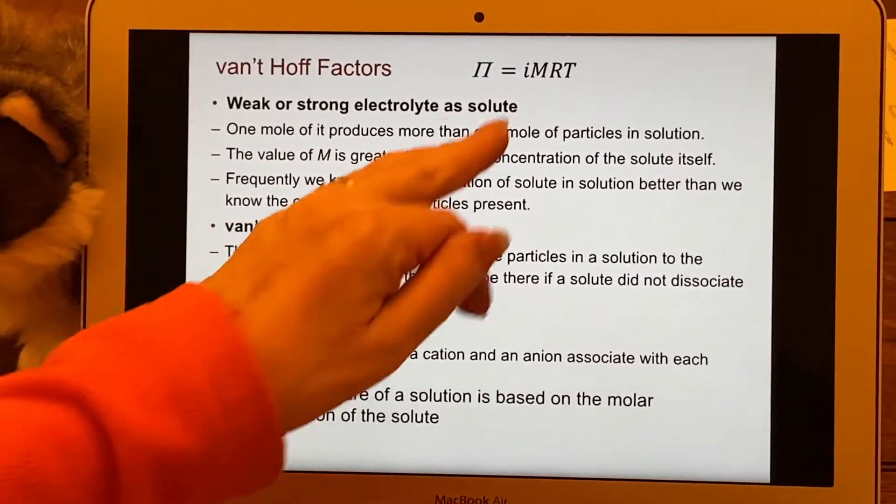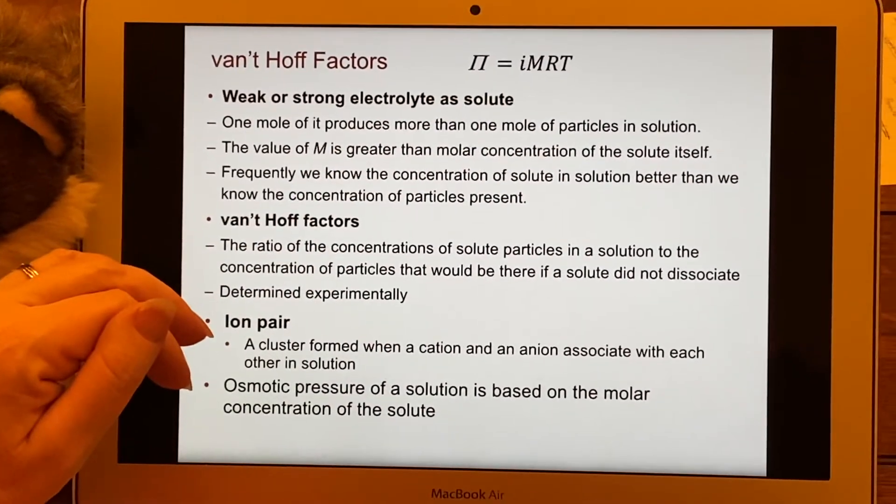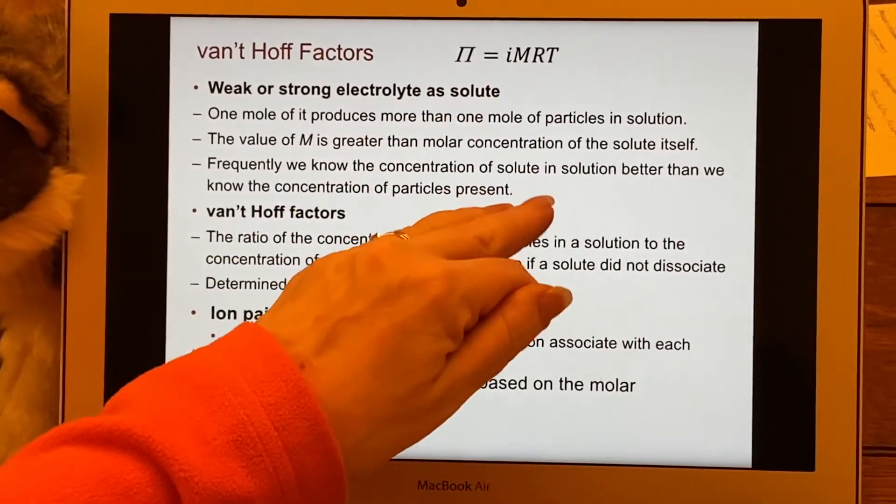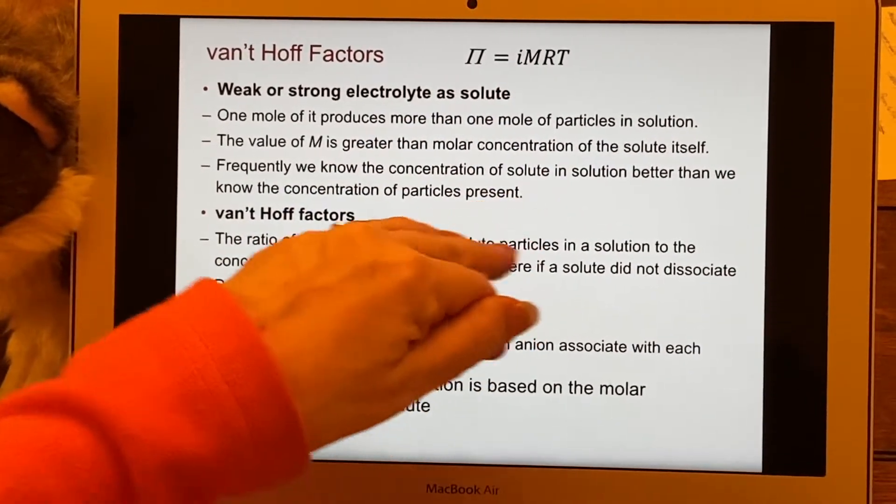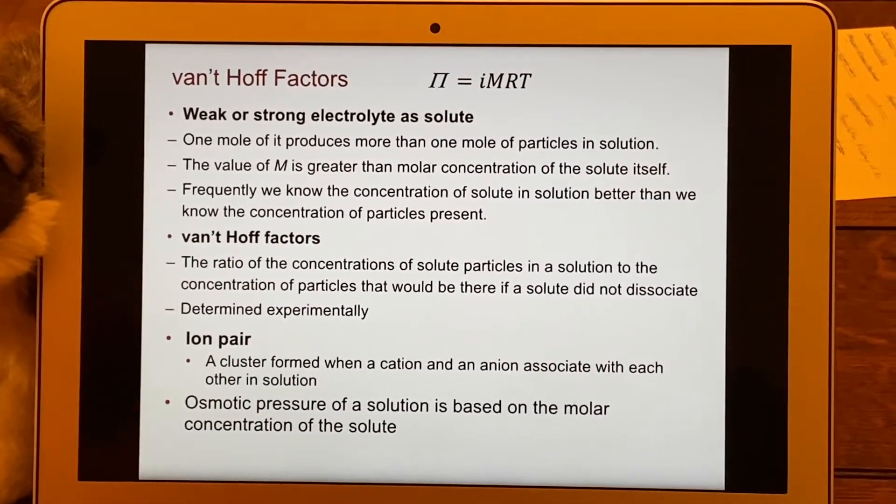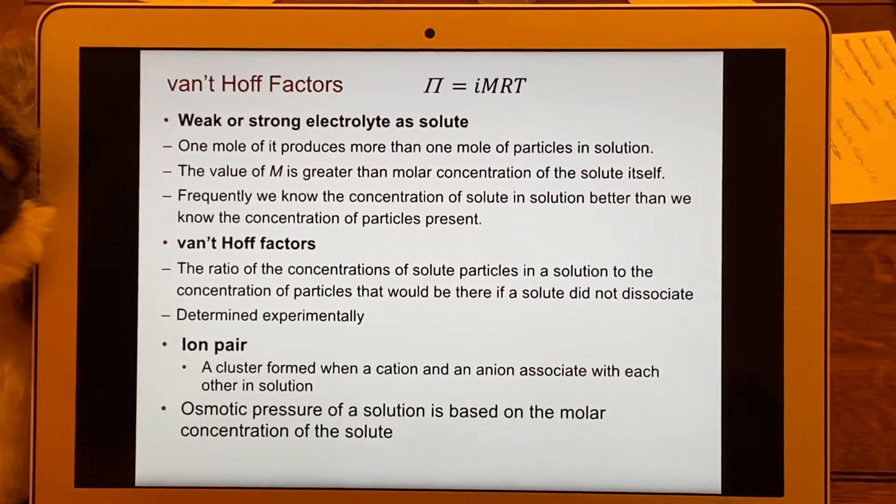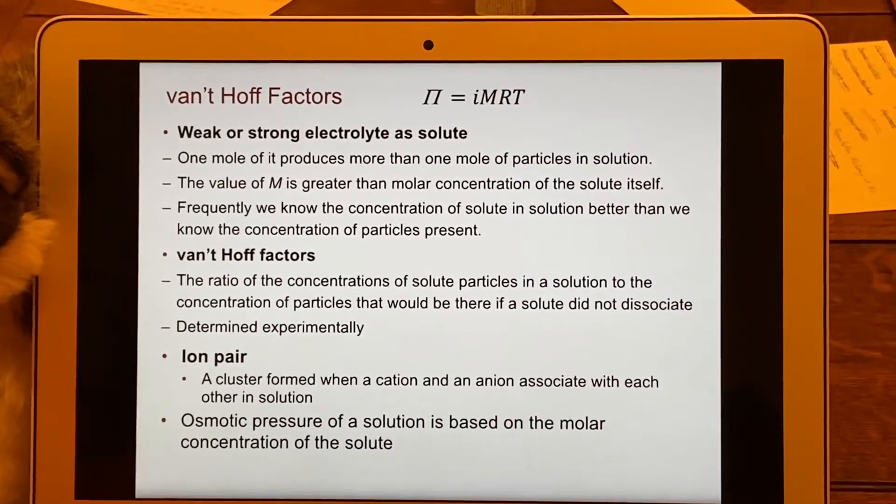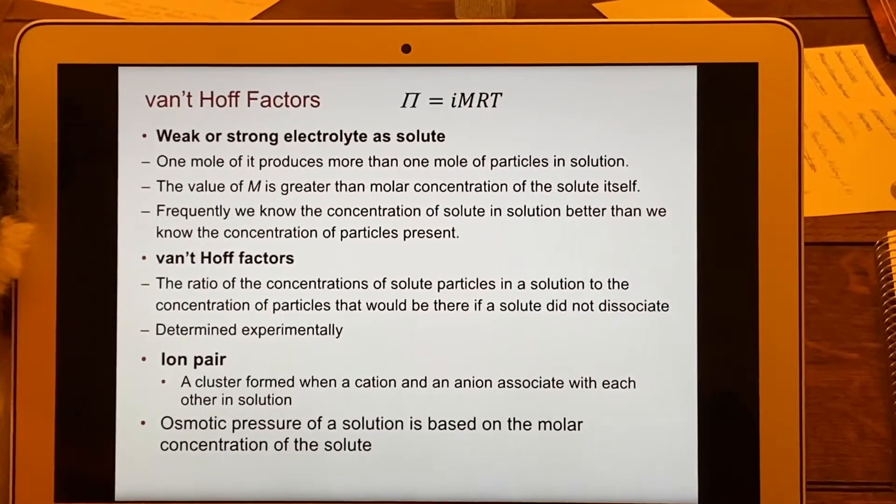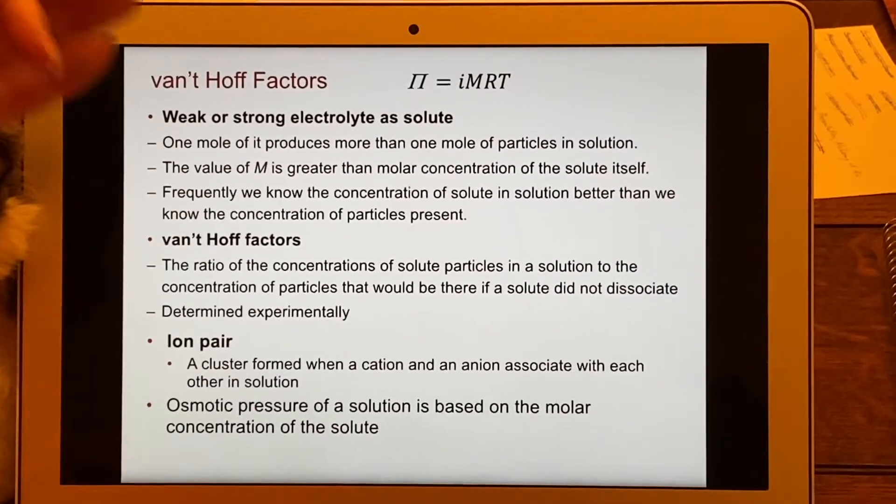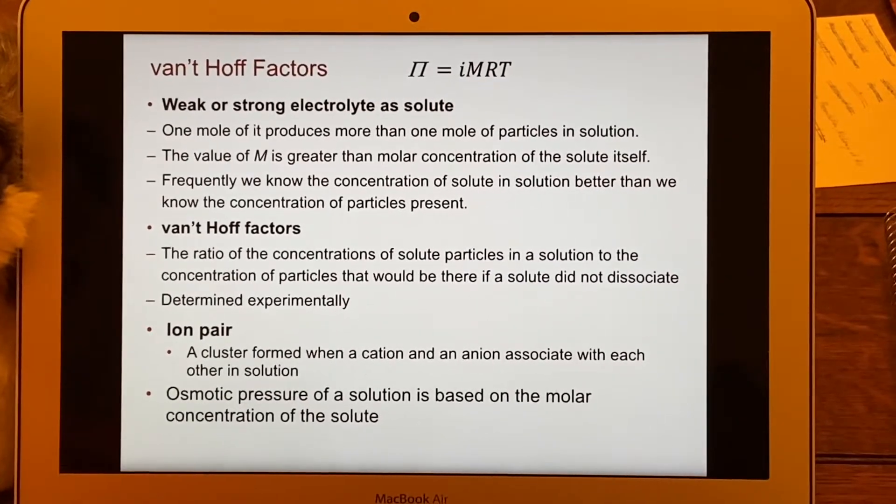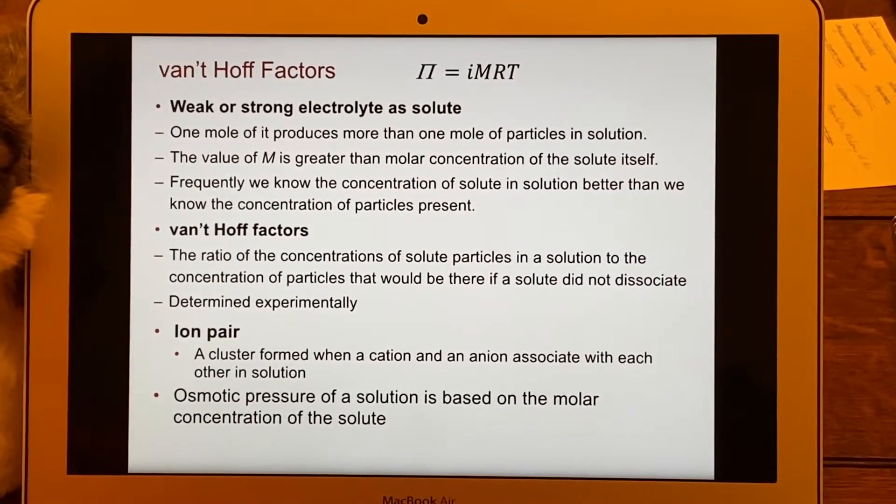Why do we keep them separate like this? Well, it's much easier for us to figure out what M is than to know what the concentration of the particles are, because we know the molar mass and everything, and we can figure out what's the molarity that I just created before it comes apart. So we need the i to help serve as a bridge between what is easy to measure and what is not.